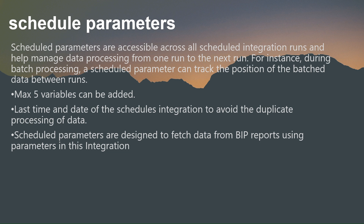When you configure a scheduled integration, you can declare up to five variables as scheduling parameters. The advantage of using these parameters is that you can avoid extracting duplicate data from the Fusion application, because the last run date and time keeps changing, so we can avoid duplicate data processing.